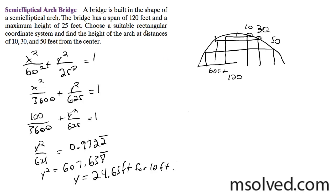So now, we need to take this. We've got 30 squared, which ends up being 900 over 3600 plus y squared over 625 equal to 1.